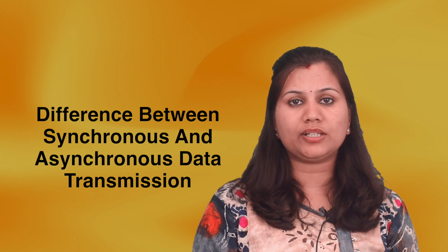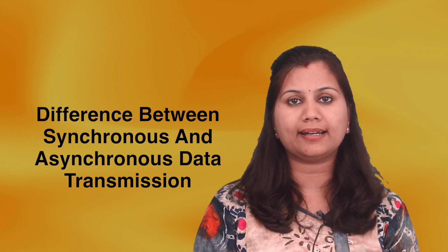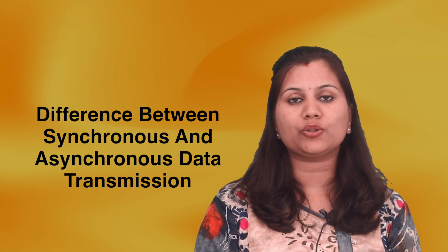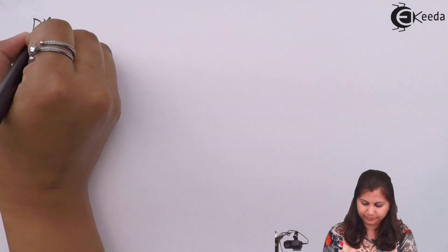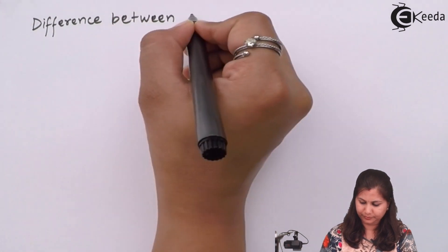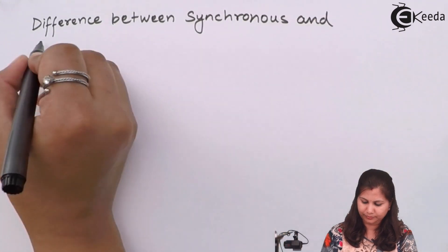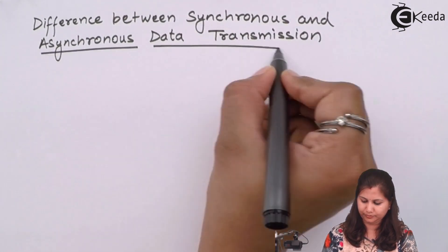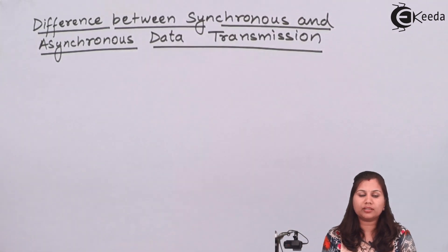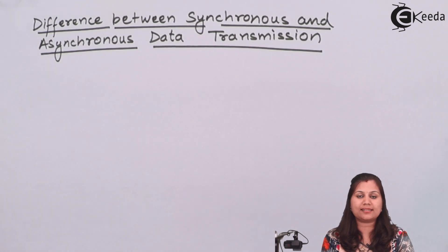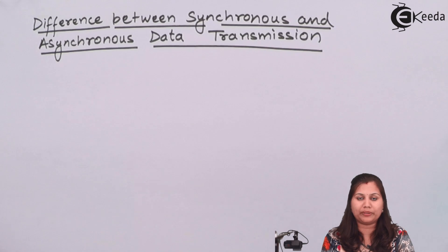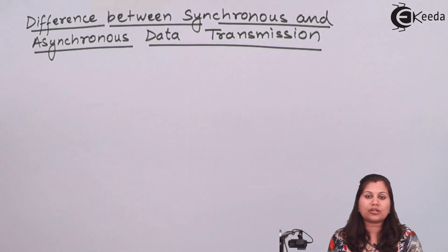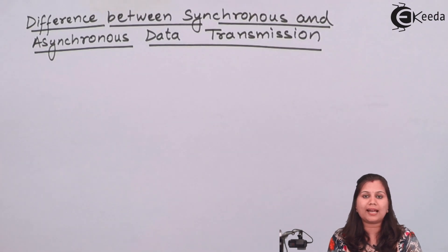Hello friends. In this video we will study the differences between the synchronous and asynchronous data transmission methods. Whenever we talk about communication between two components, one component is sending data to another — data transmission is taking place. This data transmission can be of two types: serial data transmission and parallel data transmission.